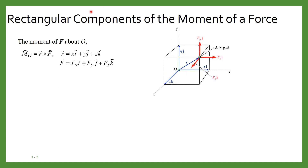Now let us see the rectangular components of the moment of a force about O, the origin. Suppose this is the force F with three components FxI, FyJ, and FzK, and we have to calculate the moment of this force about point O, which is the origin. The moment about the origin is calculated by the cross product R cross F. The R vector can be written as xi + yj + zk since the coordinates of the point are x, y, z, and the force is written as FxI + FyJ + FzK.